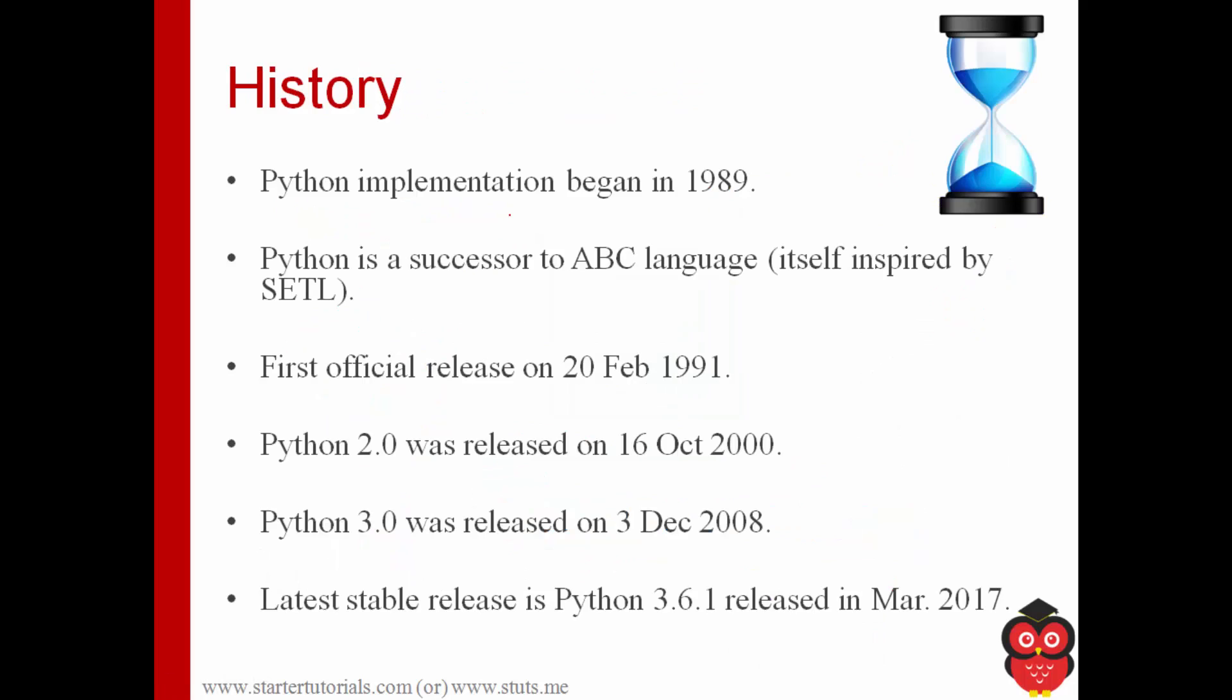Now let's look at some of the history of Python. Python was initially developed in 1989. The work started in 1989. And many of the concepts in Python are inspired from ABC language which itself is inspired by another language called SETL. SETL is set theory language.